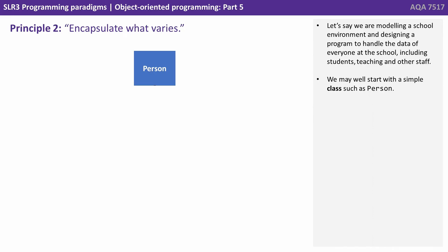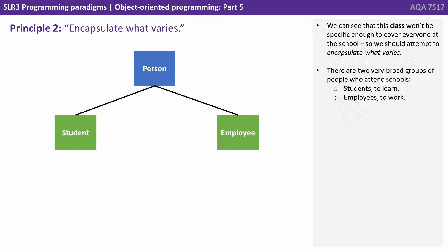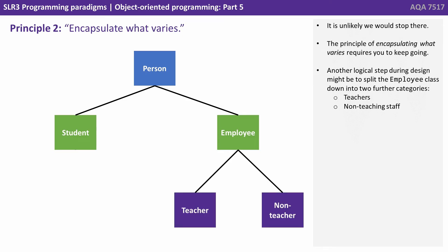Let's say we're modelling a school environment and designing a programme to handle the data of everyone at that school, including students, teaching staff and others. We may start with a simple class such as person, but this class won't be specific enough to cover everyone. So we should attempt to encapsulate what varies. There are two broad groups: students who are there to learn and employees who are there to work. A logical next step is to split the employee class into two further categories: teachers and non-teaching staff.